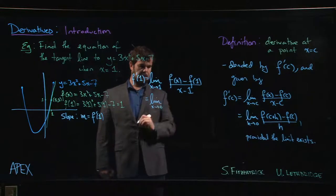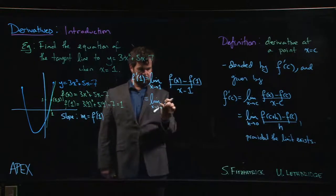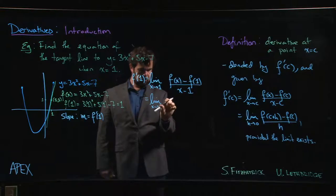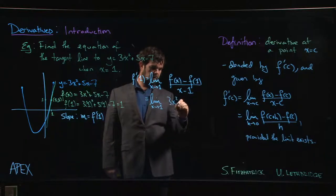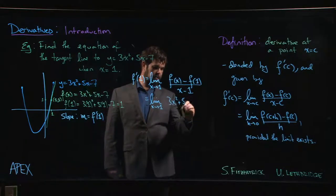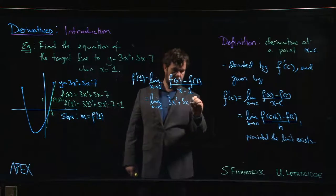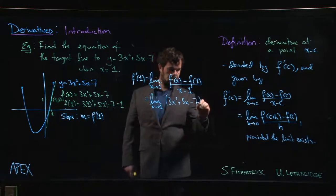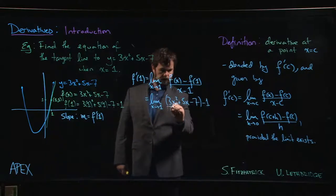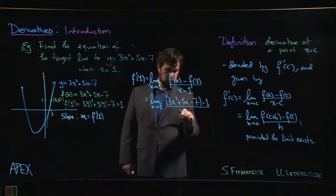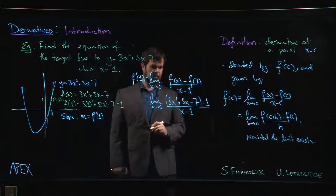So that looks like the limit, x going to 1 of f of x, 3x squared plus 5x minus 7 minus 1 over x minus 1.